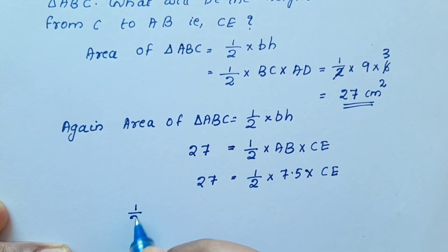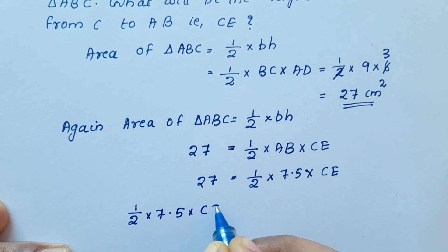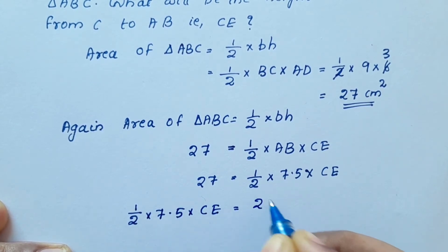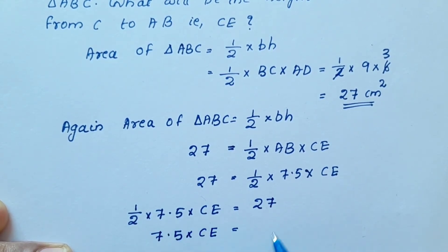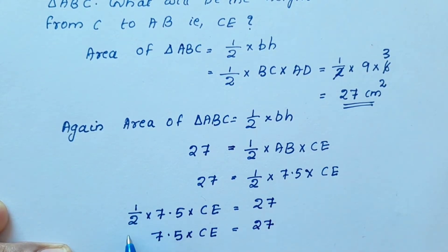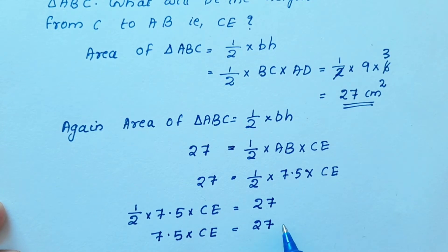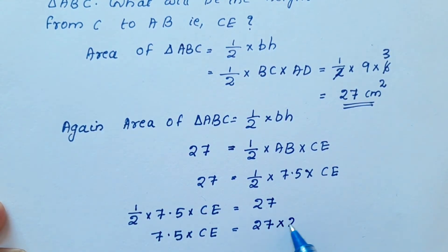So, 1/2 into 7.5 into CE equals 27. Therefore, 7.5 into CE equals 27 into 2.